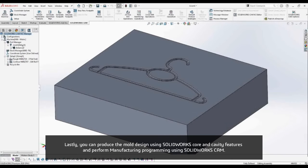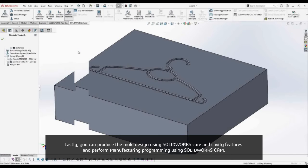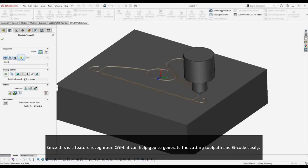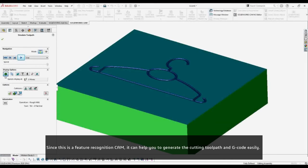Lastly, you can produce the mold design using SOLIDWORKS Core and Cavity features and perform the manufacturing programming using SOLIDWORKS CAM. Since this is a feature recognition CAM, it can help you to generate the cutting toolpath and G-code easily.